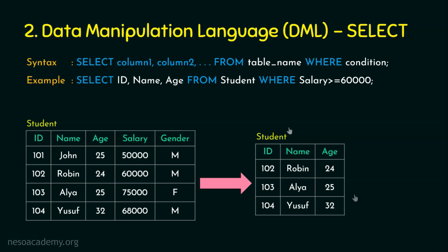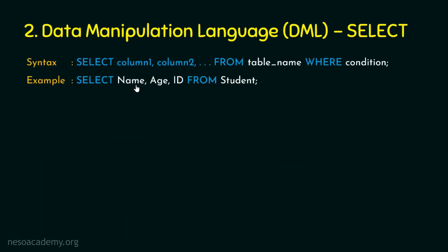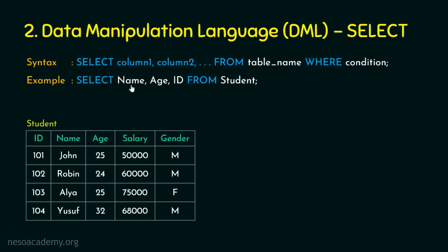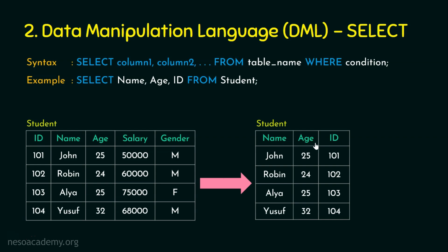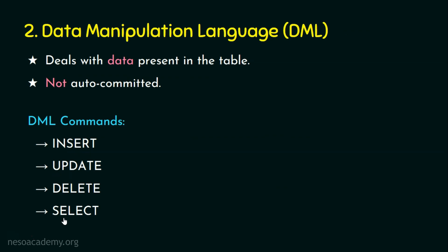We can also change the column order in the view. In the original table, id comes first, then name, age, salary and gender. But suppose we want name first, age second and id third: SELECT name, age, id FROM student. All rows will be listed but only these three columns in that order — name, age, id — even though the original table has id first. The original table is not affected because this is just a view; we are not updating the original table. I hope you are now able to understand insert, update, delete and select DML commands.